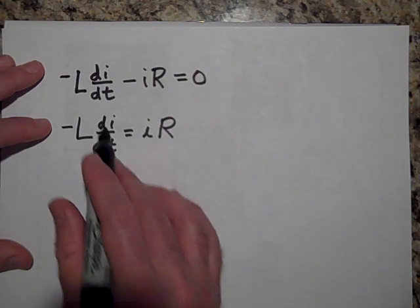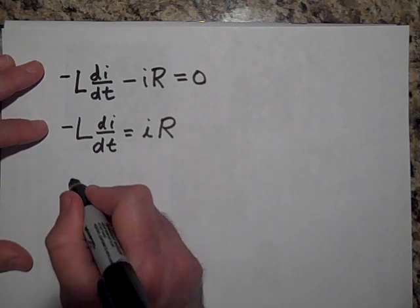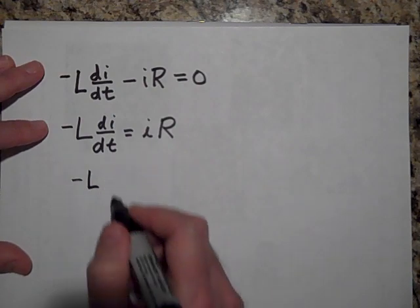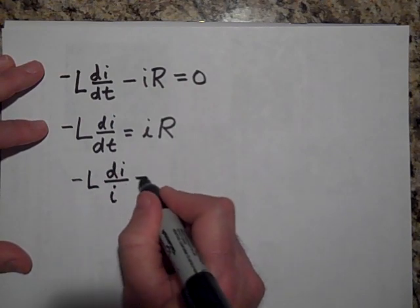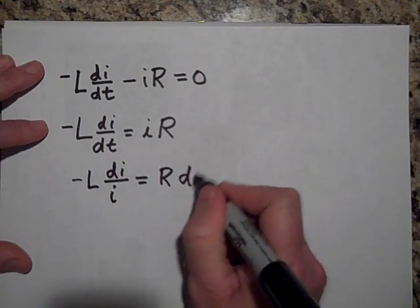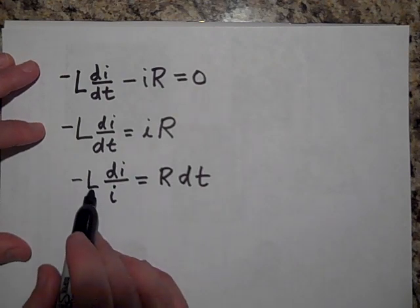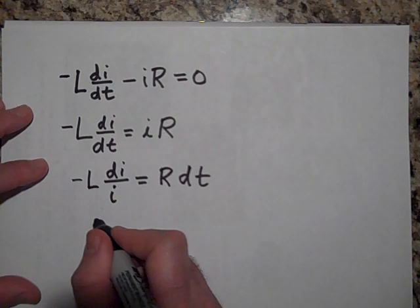And now let me combine my terms together, get my I together with my di. So I'll bring the I underneath here, so I have negative L di over I, and on this side it's going to be R times dt.